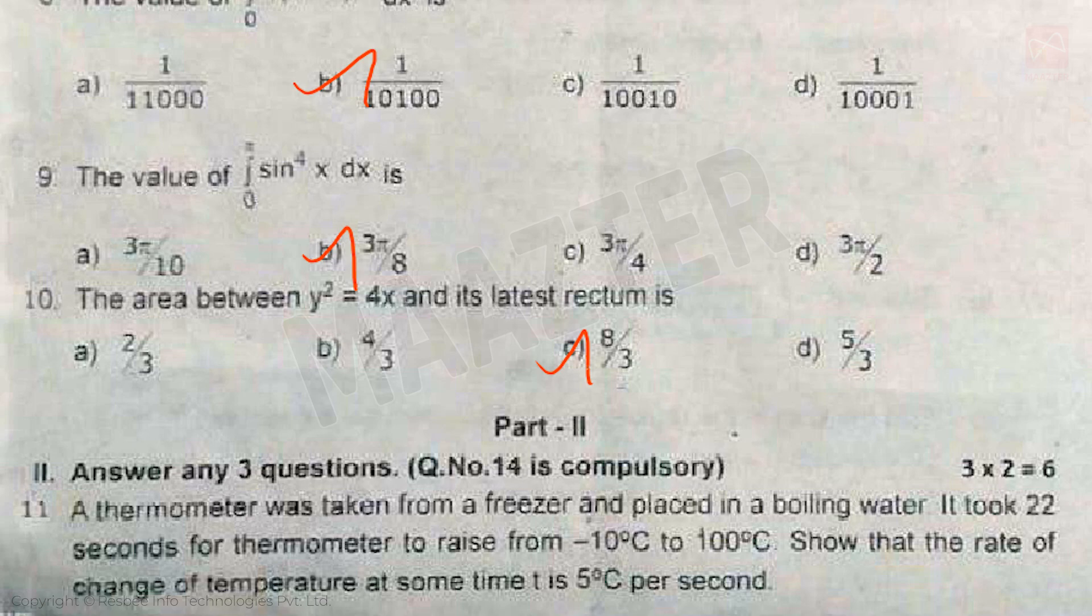Question number 14 is compulsory, and each question carries 2 marks, totaling 6 marks. Question 11: A thermometer was taken from a freezer and placed in boiling water. It took 22 seconds for the thermometer to rise from -10°C to 100°C. Show that the rate of change of temperature at some time t is 5°C per second.